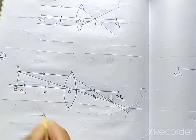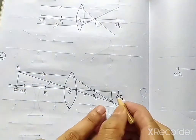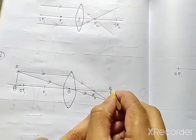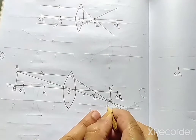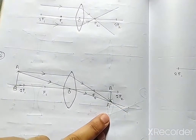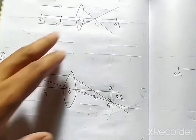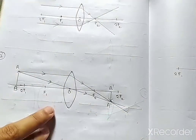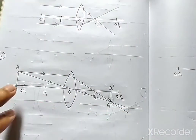You have to label the object as A and B, and the image as A-dash and B-dash. This is the image formation shown in the second diagram.